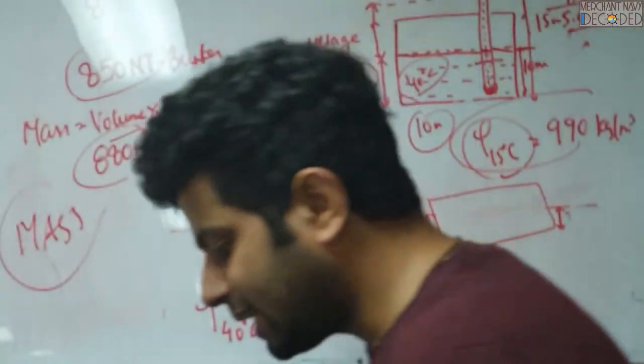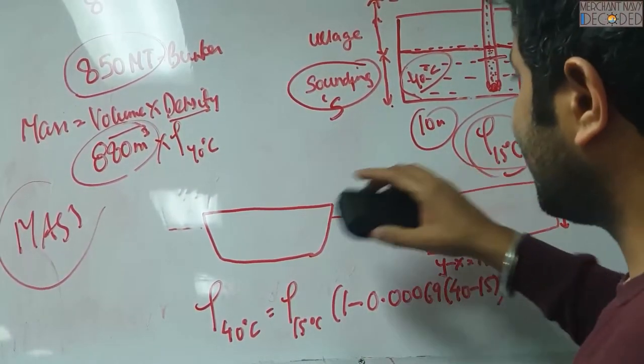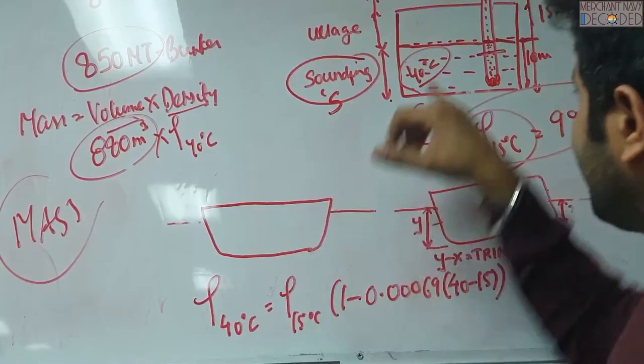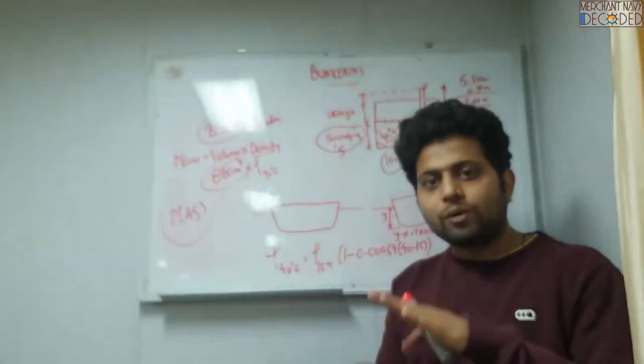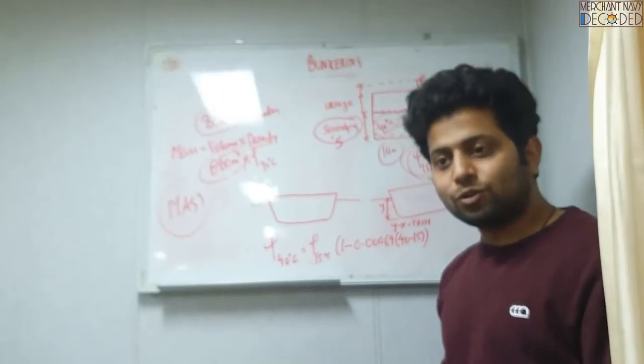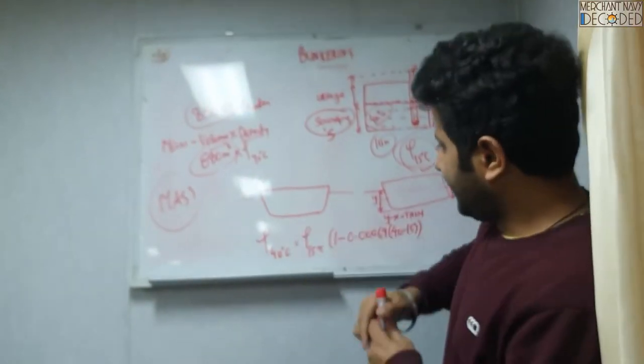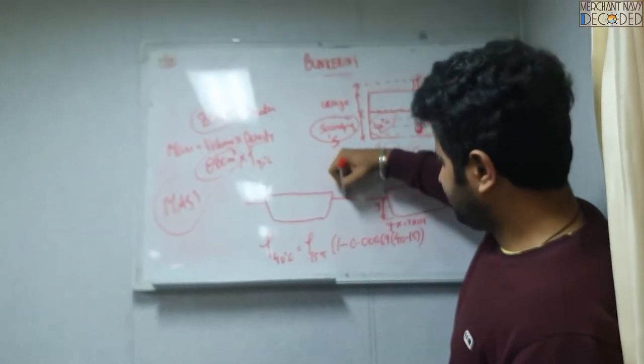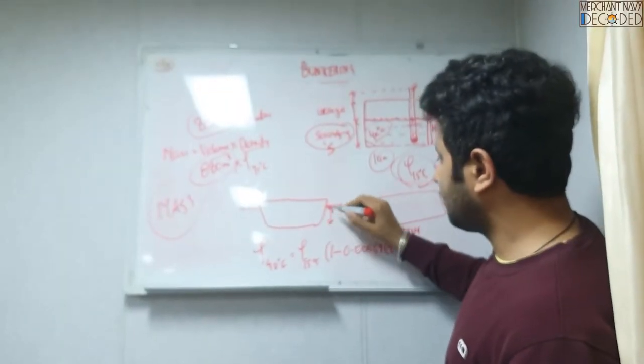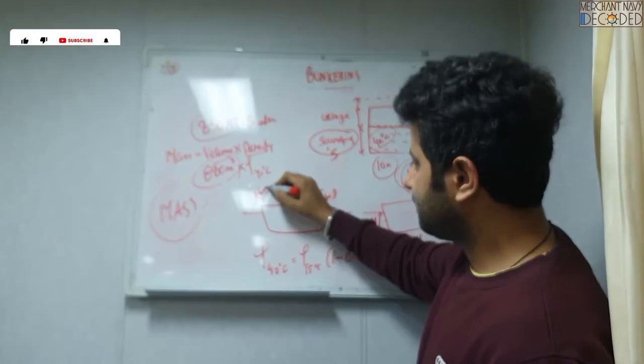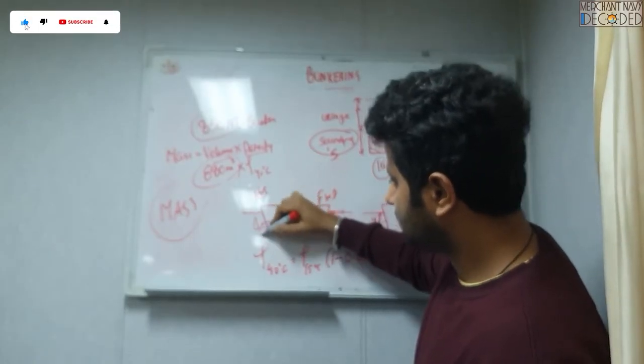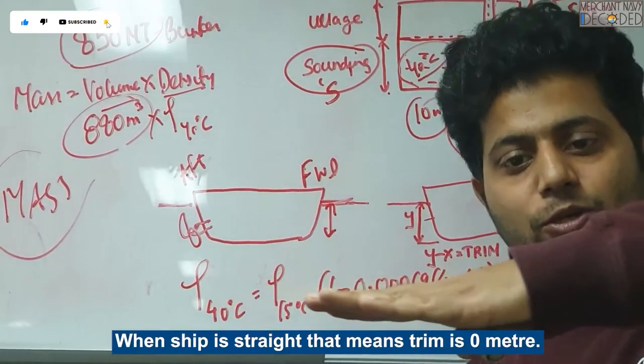Another thing that you have to understand is, it is not just about that. When you are taking the sounding and ullage, there are two factors on which your sounding depends. First thing you have to know is, if your ship is straight, that means this is the forward part and this is the aft part where there is a propeller. If it is straight, that means trim is 0, so whatever sounding you get, that should be accurate one. But sometimes what happens is, your ship is at trim.